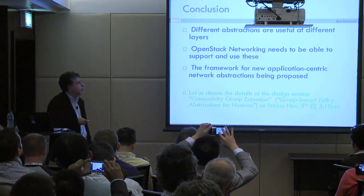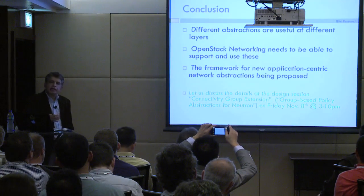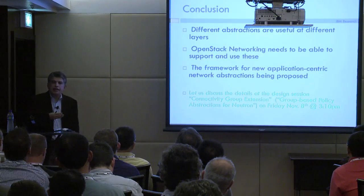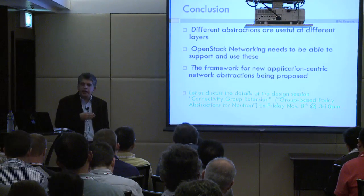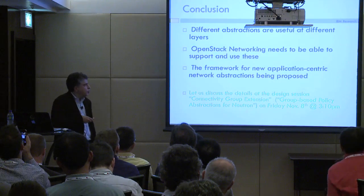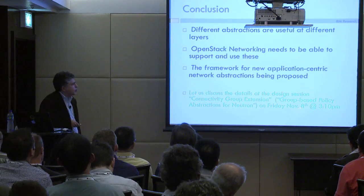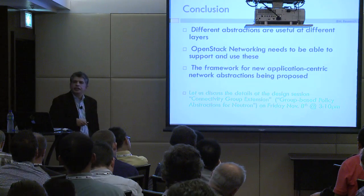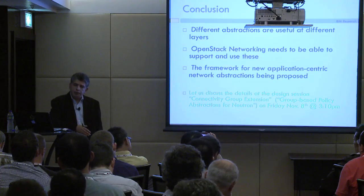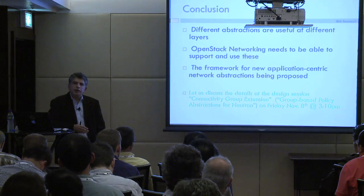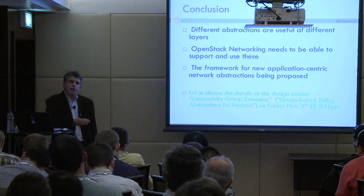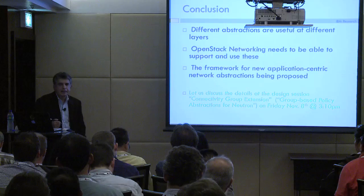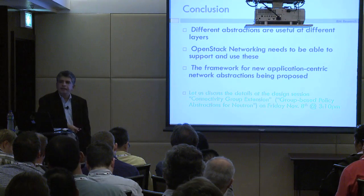To conclude, I talked about the fact that at different layers of the stack you may need to use different types of abstraction, and we are proposing to add more application-centric abstraction to Neutron. This framework is going to be discussed on Friday, November 8th at 3:10. The connectivity group extension — group-based policy abstraction — is where we'll talk about details, how we can go forward, and how we can start implementing some of these features. We are all invited to attend that session.